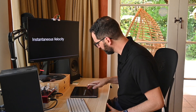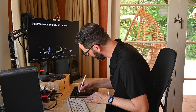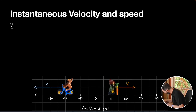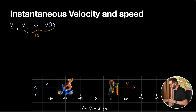Kia ora. In this video we're going to extend our idea about velocity and talk about instantaneous velocity, which is the velocity at a particular moment in time. We write it in a couple of different ways — as a vector v, or in one dimension as v or v of t. Remember how we sometimes drop the bold notation when working in one dimension. Notice we don't have that average subscript anymore; we just want to know what the velocity is at a particular instant in time.